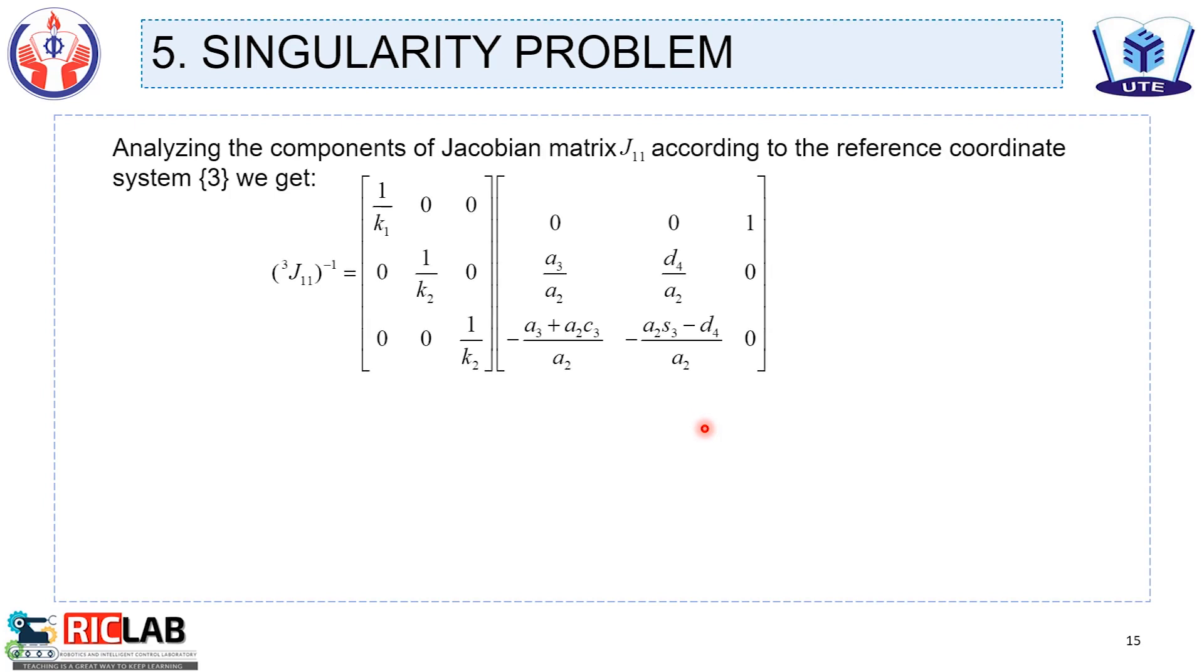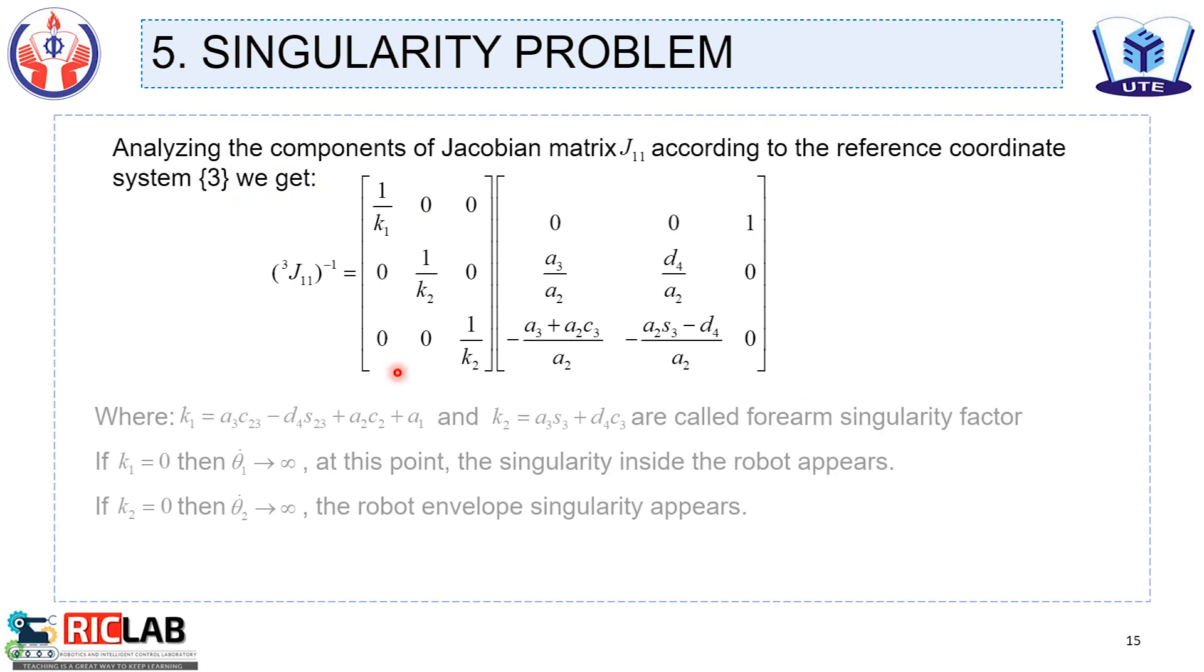The next part is Singularity problem. Analyzing the components of Jacobian matrix J according to the reference coordinate system 3, we get that